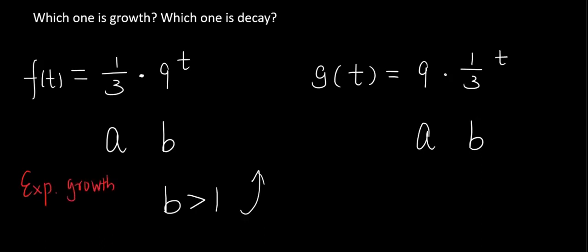All right, remember the rule says if b is greater than zero and less than one, then it's exponential decay. Therefore, we write down exponential decay.